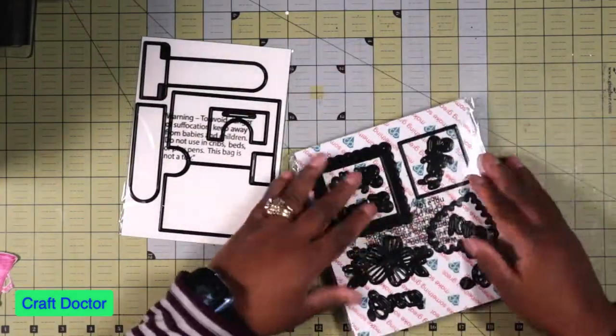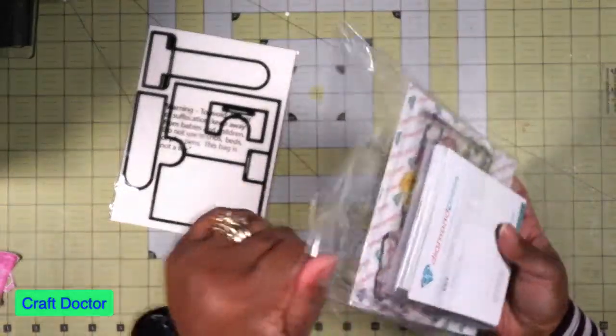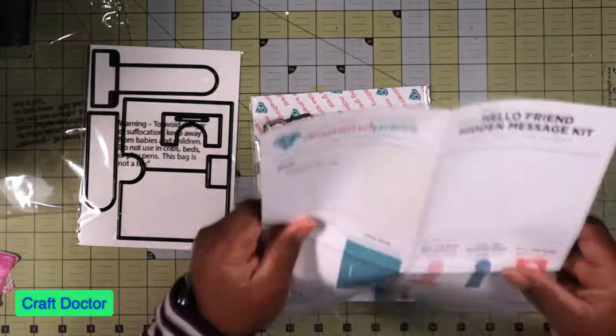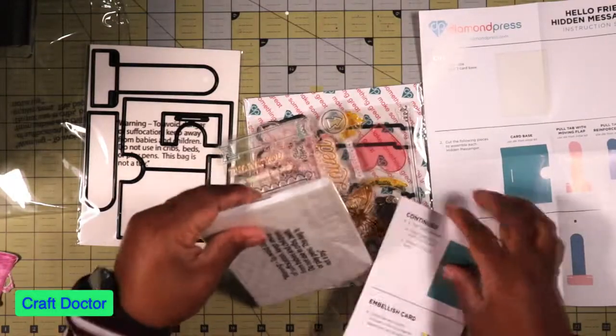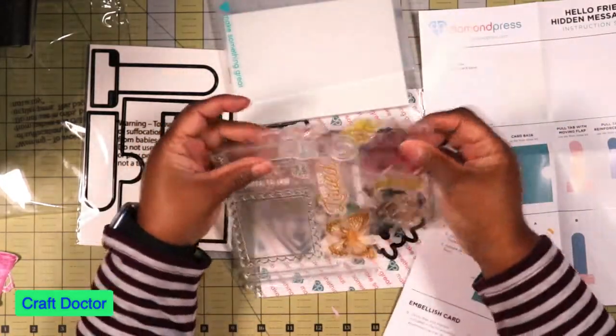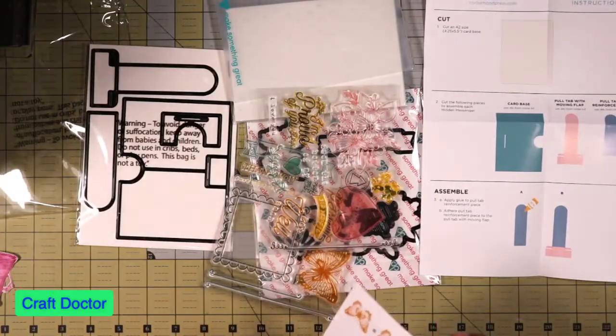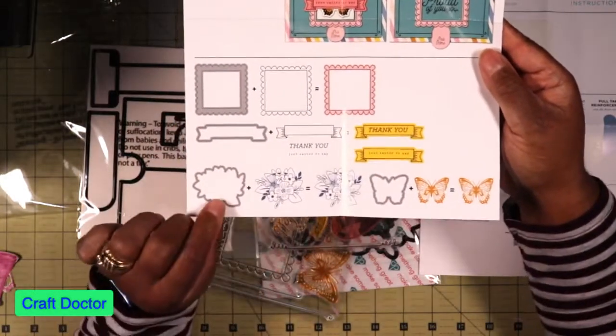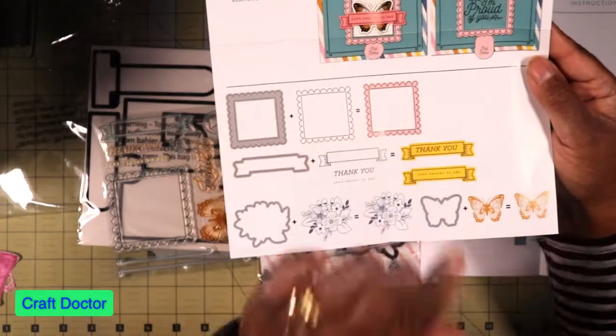Then we have this Diamond Press. I thought this Hello set was super cute and I got two other sets that didn't come with a mechanism, but this one did. I got this one directly from Diamond Press and this one is called the Hello Friends Hidden Message Kit. This is the mechanism as you can see, and it came with a whole bunch of sticky foam dots, of course the folder, and these lovely stamps.